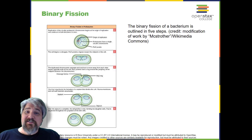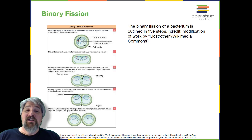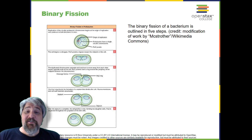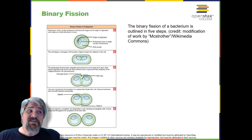In bacterial cells, the genome consists of a single circular DNA chromosome. Therefore, the process of cell division is simplified. Mitosis is unnecessary because there is no nucleus or multiple chromosomes. This type of cell division is called binary fission. The cell division process of prokaryotes, called binary fission, is a less complicated and much quicker process than cell division in eukaryotes.